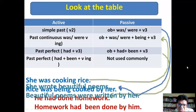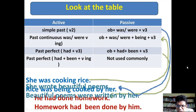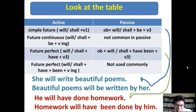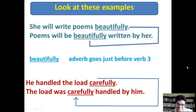In past continuous, the passive uses 'was/were + being + past participle.' In past perfect tense, 'had + been' is used before the verb, though past perfect is not commonly used when changing to passive. For simple future, use 'shall/will + be + past participle.' For future continuous, use 'be verb + verb + ing.' Future perfect passive uses 'will/shall + have + been + past participle.' Future perfect continuous is not commonly used in grammar.